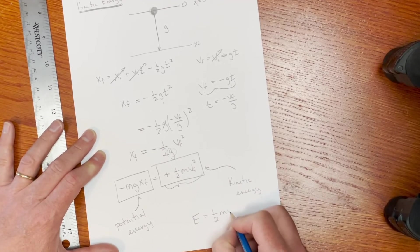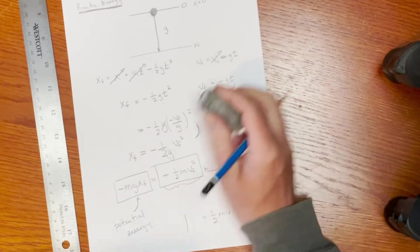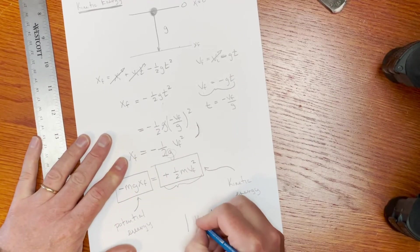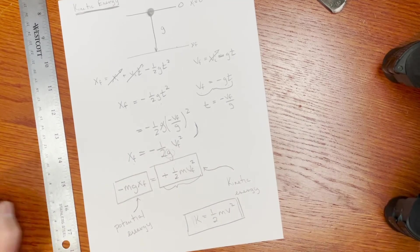And usually we call this K, it's a way of describing how energy is stored in motion. And we'll see how we use that in a couple of examples coming up.